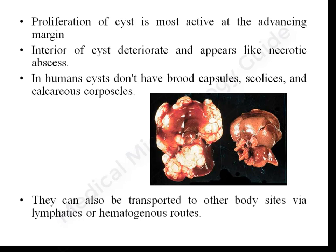The 14-3-3 protein promotes progressive and potentially unlimited growth behavior of the organism within host tissue. Proliferation is most active at the advancing margin of the cyst, while the interior deteriorates and appears like a necrotic abscess. In humans, the cyst will not have any brood capsules, scolices, or calcareous corpuscles. Bits of the cyst can be transported to other parts of the body via lymphatic or hematogenous routes, almost resembling carcinoma — but it is not a cancer as such.